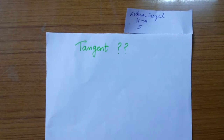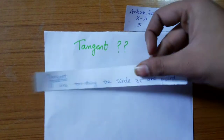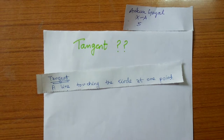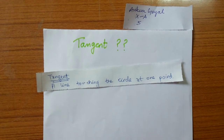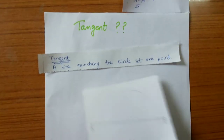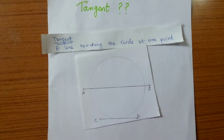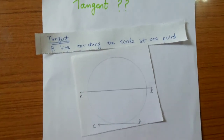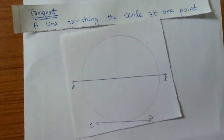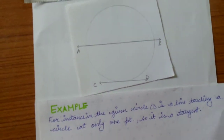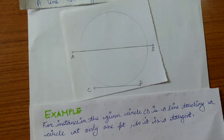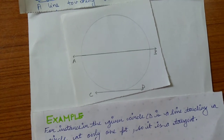What do you mean by a tangent? A line touching the circle at one point is known as its tangent. For instance, in this given circle, the line CD is touching the circle at one point, so it can be called its tangent.